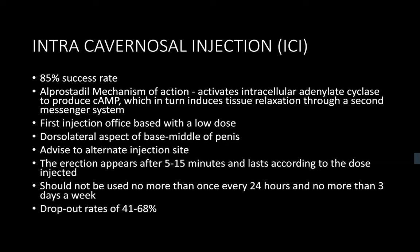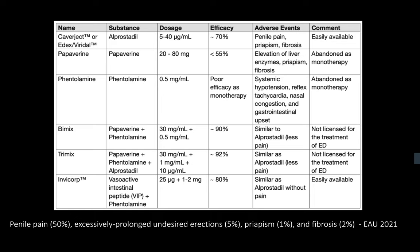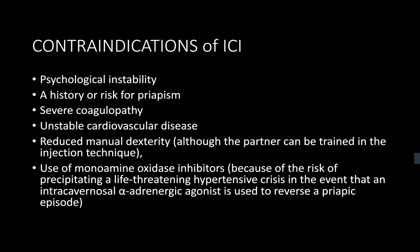If there is a patient with known sickle cell disease or a high risk of priapism, I would consider Invicor. I would also consider Invicor if someone has underlying Peyronie's disease, because the risk of corporal fibrosis is a lot less. If the patient is complaining of penile pain on Caverject injection, is that an indication for Invicor? Yes, because Invicor does not cause pain, whereas with Caverject there is a 50% chance of pain.